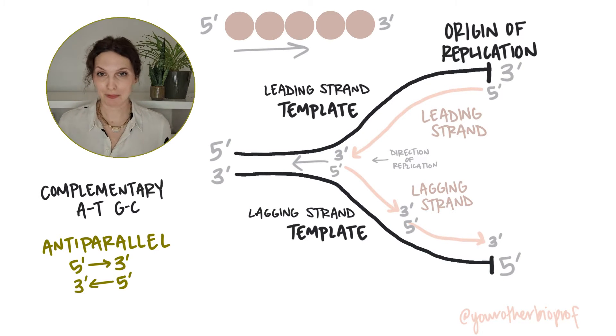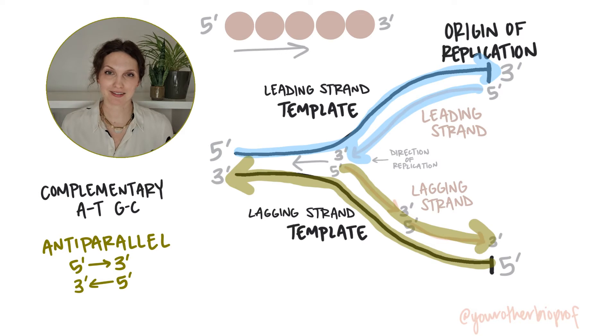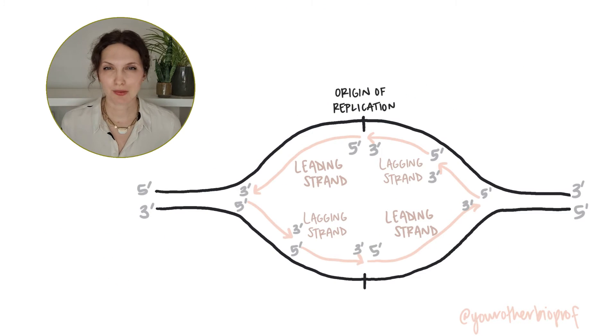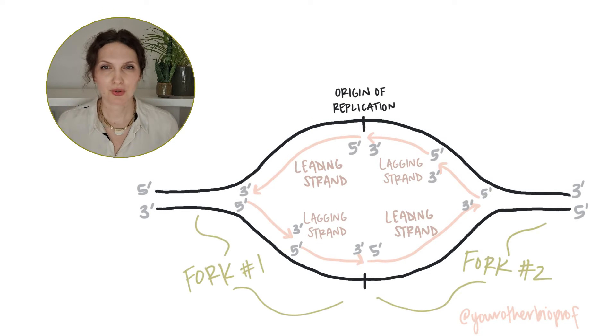So back to that idea of anti-parallel strands when we pair them up. Notice how the top template strand has the opposite five prime, three prime directionality when we compare it to the leading strand. And the bottom template strand has the opposite five prime, three prime directionality when compared to that lagging strand. And remember, for each replication bubble, you've got two replication forks. So you can see that for each fork, you've got a leading strand and a lagging strand and replication is proceeding in both directions into both forks.